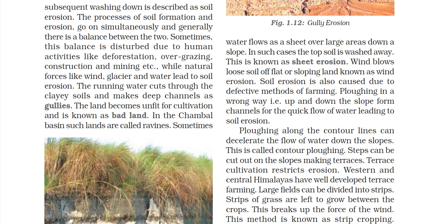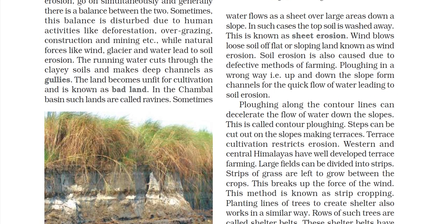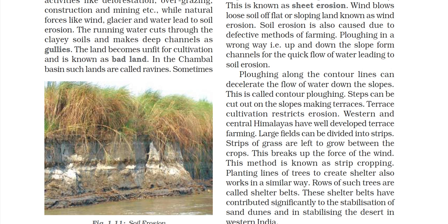Ploughing along the contour lines can decelerate the flow of water down the slope, reducing erosion — this is called contour ploughing. Steps can also be cut out on the slope to make terraces; terrace cultivation will restrict erosion. Western and Central Himalayas have well-developed terrace farming. Large fields can be divided into strips, where strips of grasses are left between the crops to break up the force of wind — this method is called strip cropping.